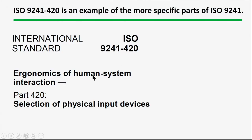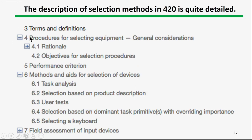Let me focus on one particular document with a lot of detail: ISO 9241 part 420, which has to do with the selection of physical input devices. This document was last updated in 2011. It has nine references and 106 pages — a document with 106 pages should have a tremendous amount of useful content, and this one does. Here's a truncated version of the table of contents. It starts with terms and definitions, and there is an outline of procedures for selecting equipment.